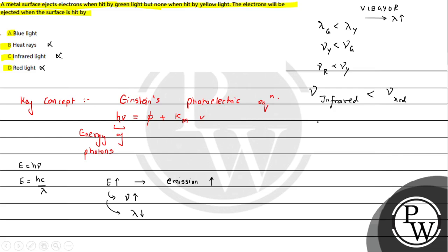If we talk about blue color, its frequency is more than red and also more than green. Blue color wavelength is smaller than green, so energy is higher. This means blue color incident light will cause electron emission. So blue — option A — will be the answer.